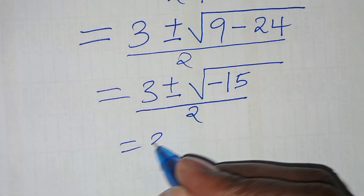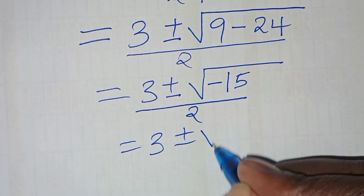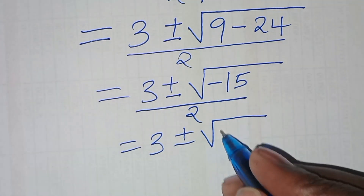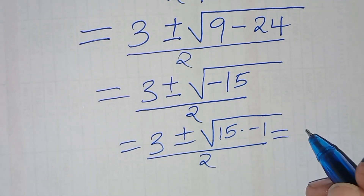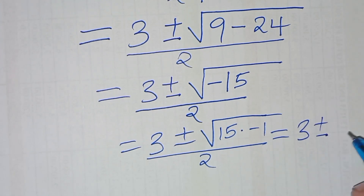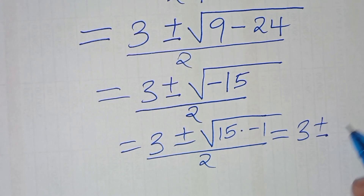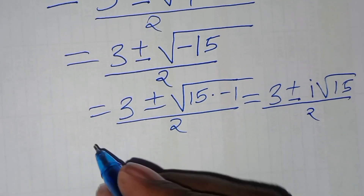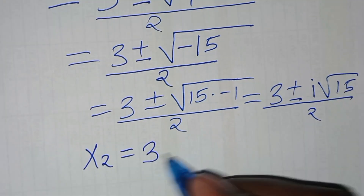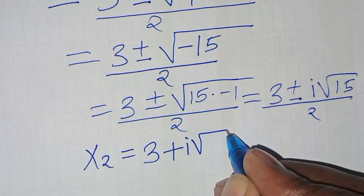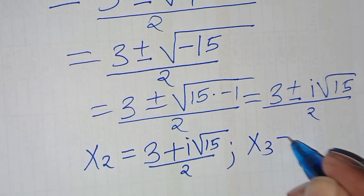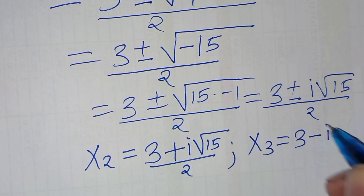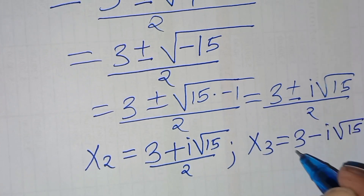We can express the square root of minus 15 as the square root of 15 times minus 1, all divided by 2. So we have 3 plus or minus, and since the square root of minus 1 is i, we have i square root of 15, divided by 2. This implies x2 is equal to 3 plus i square root of 15 divided by 2, and x3 is equal to 3 subtract i square root of 15 divided by 2.